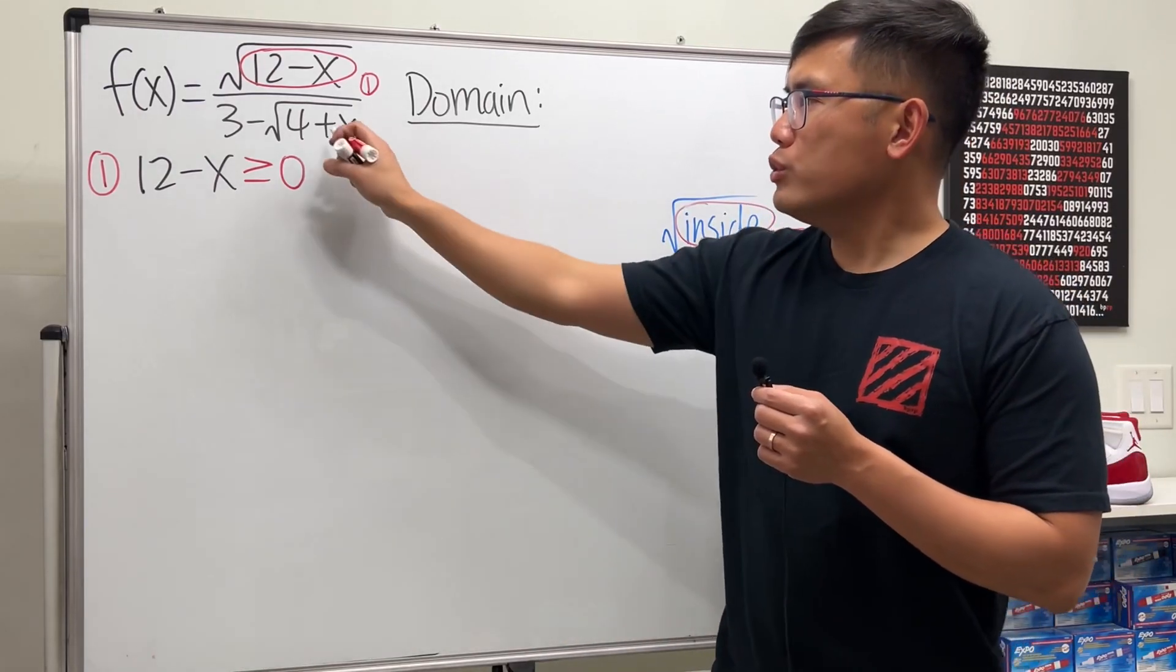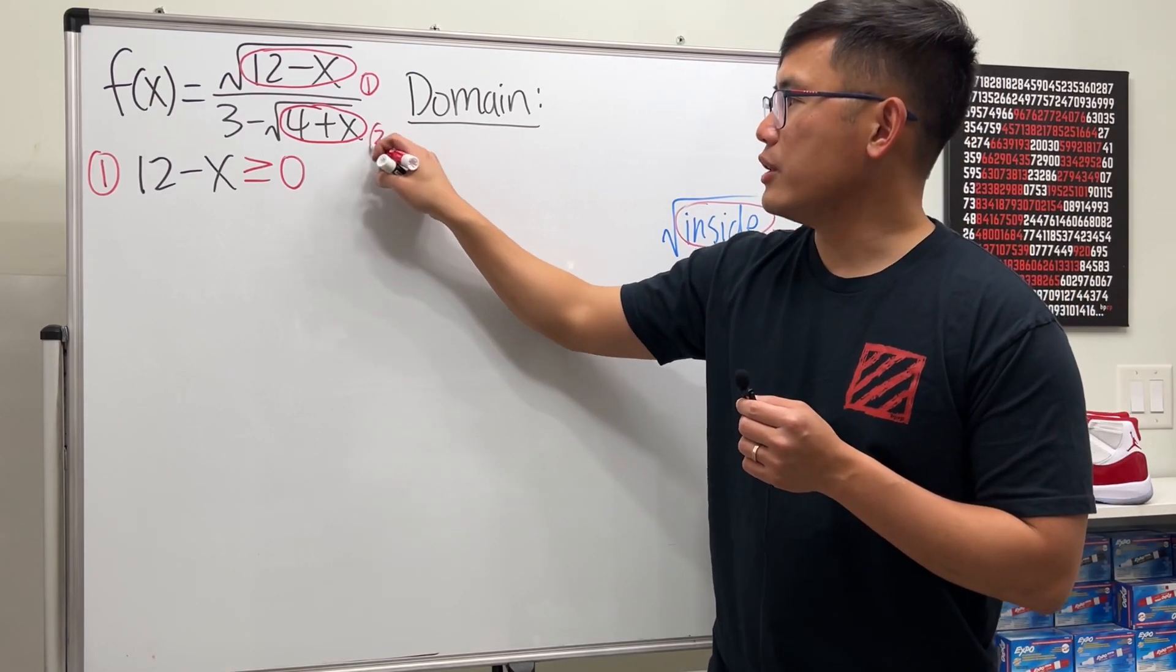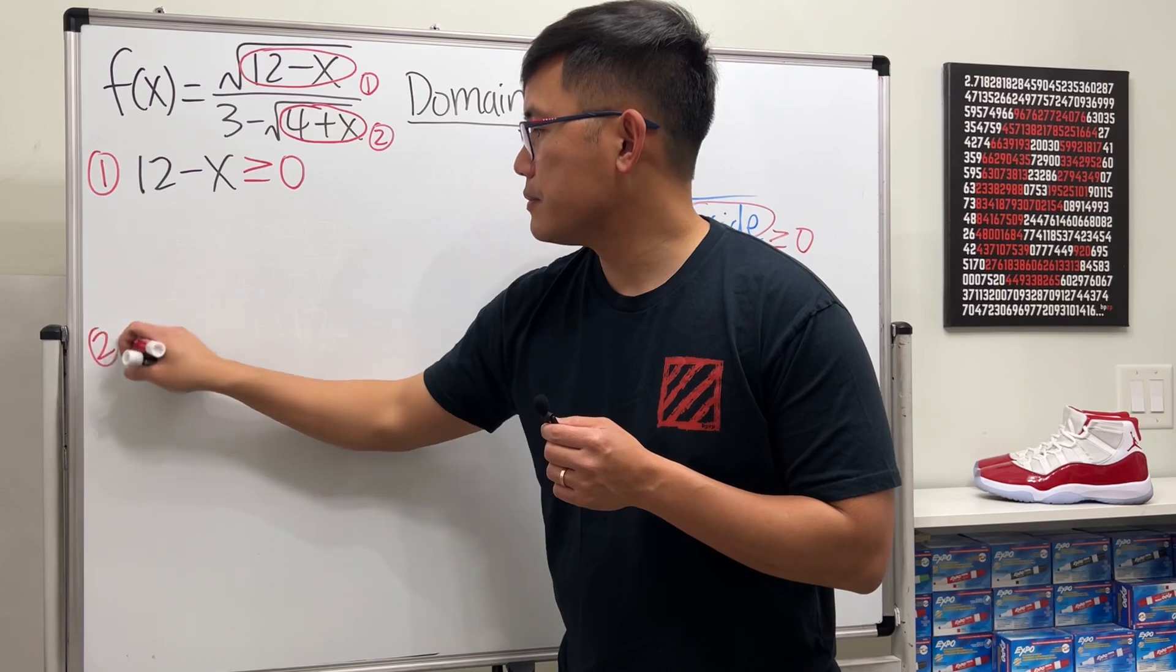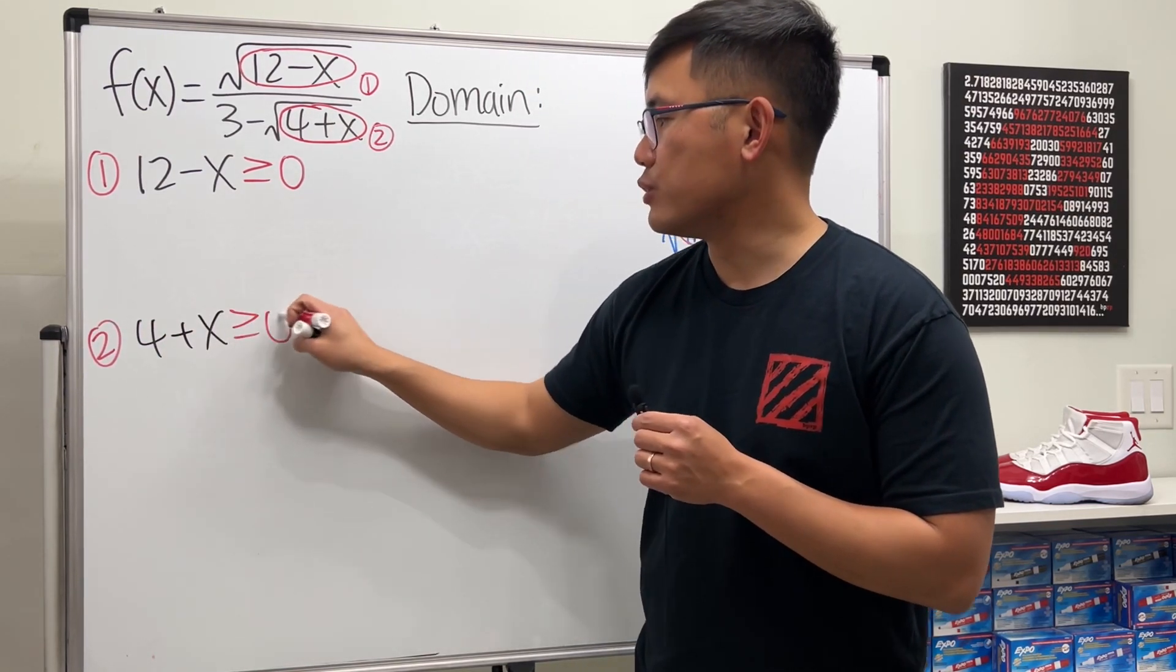Now we also have this right here, the 4 plus x inside the square root, so that's condition two. We will have to make sure 4 plus x has to be greater than or equal to zero.